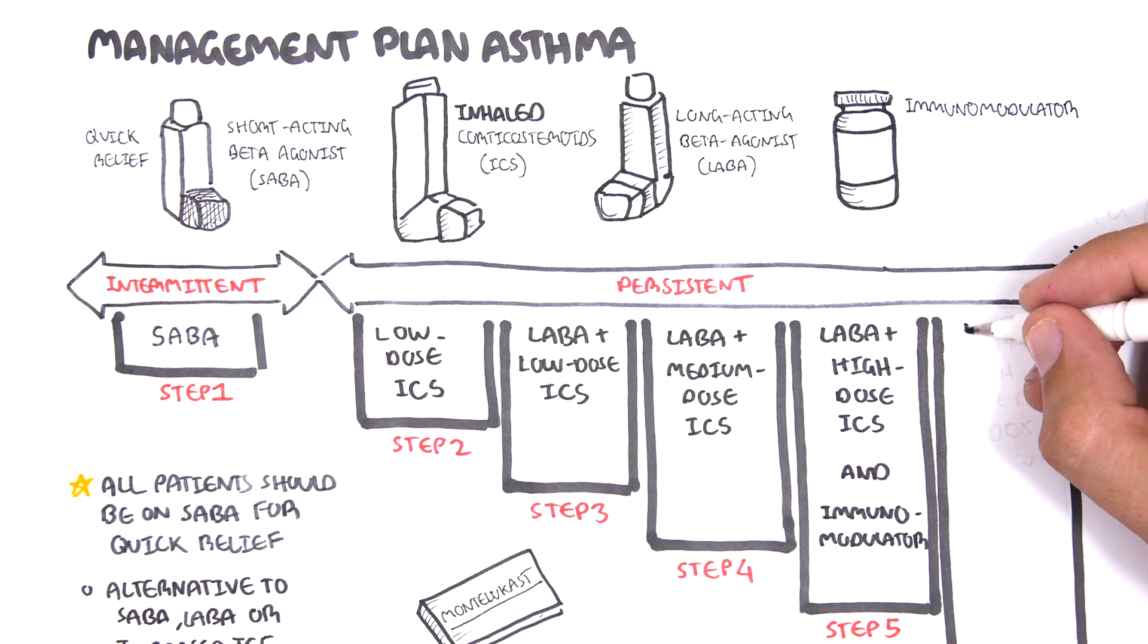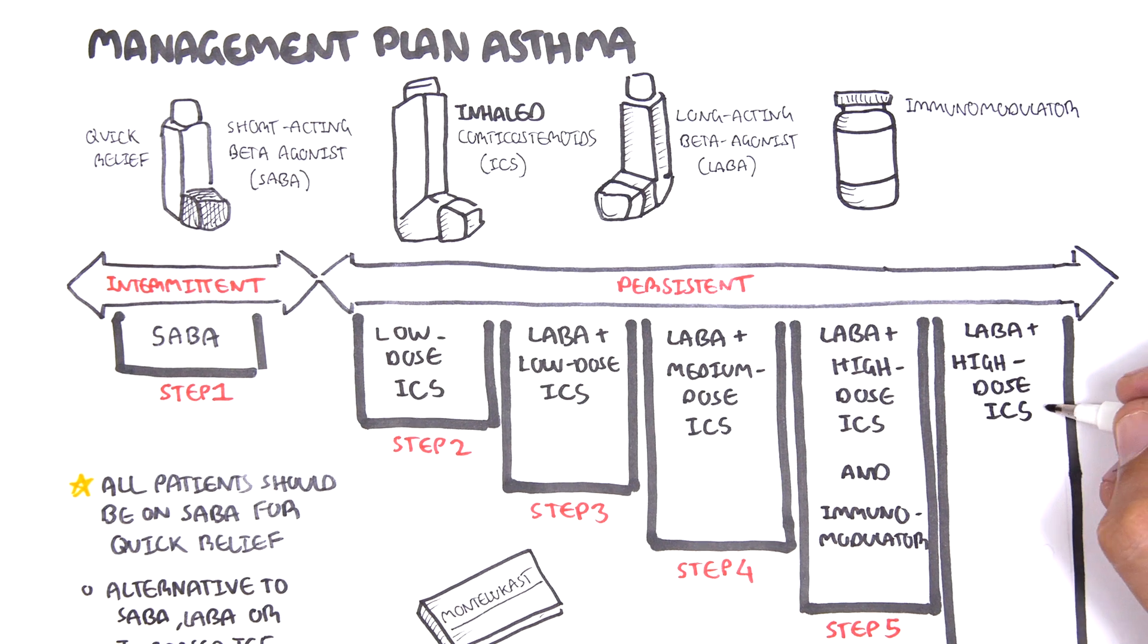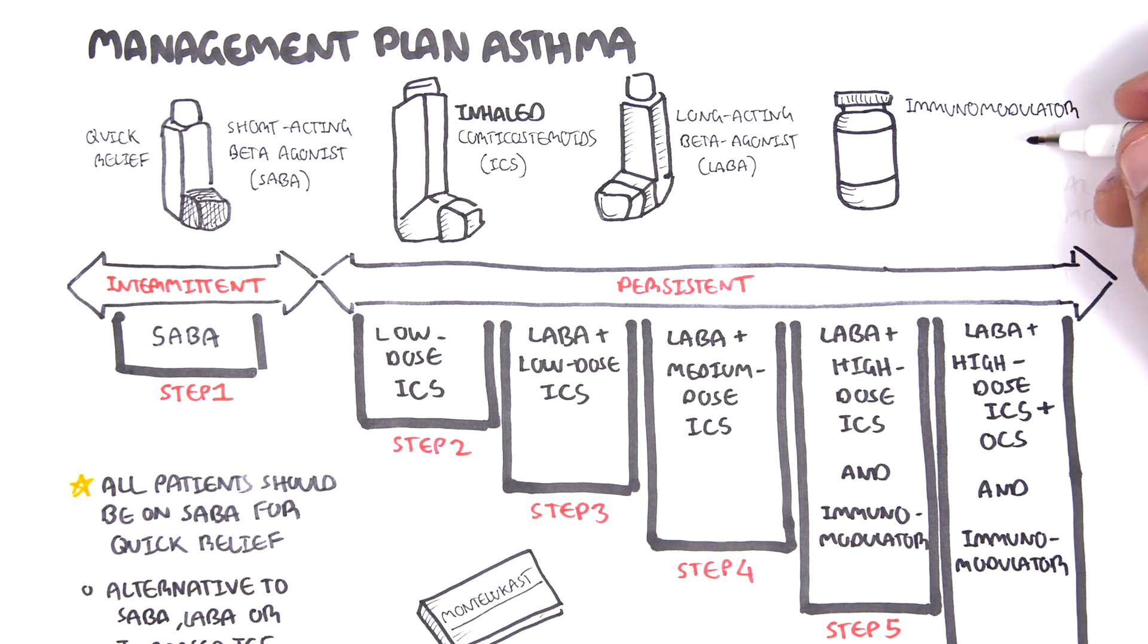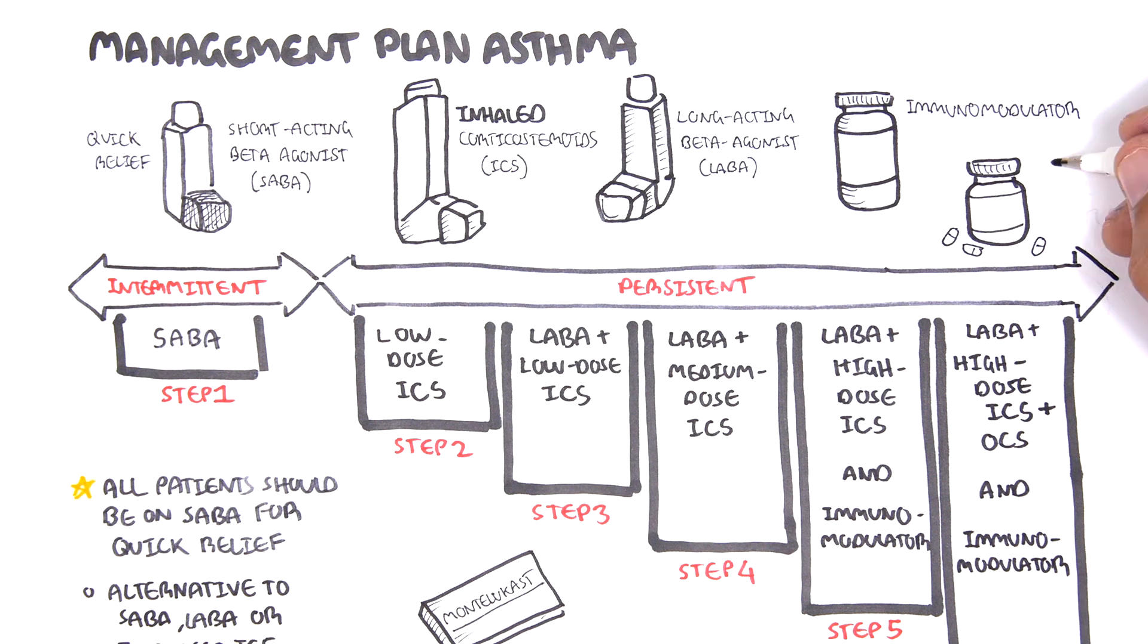Step 6, asthma is severe and so in addition to all the medications in step 5, an oral corticosteroid is also used.